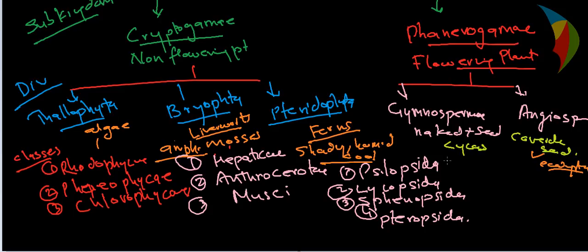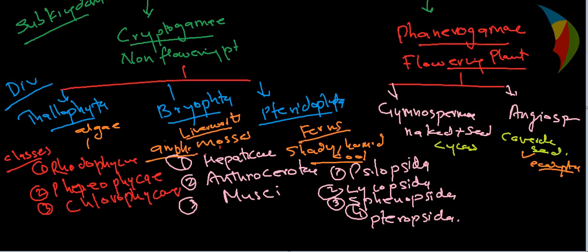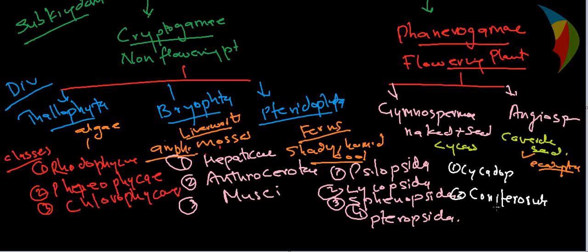Just as we divided the non-flowering plants into divisions with classes, this division also has certain classes. In Gymnosperm there are three classes: the first is Cycadopsida, the second is Coniferopsida, and the third is Gnetopsida.